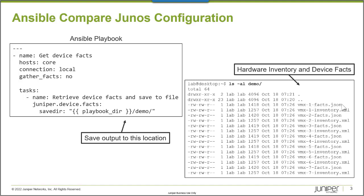The facts output includes software-related information: software version, software licenses, and system uptime. You also retrieve hardware inventory information. Now these are virtual MX devices, so the hardware information isn't as extensive as you might retrieve from a physical platform, but all that can be retrieved is there.